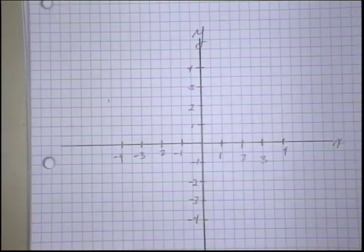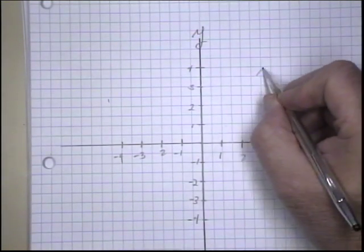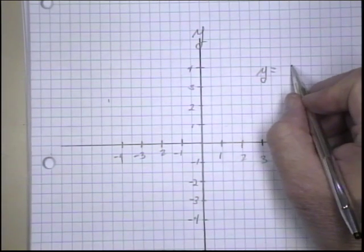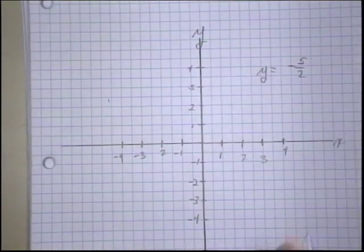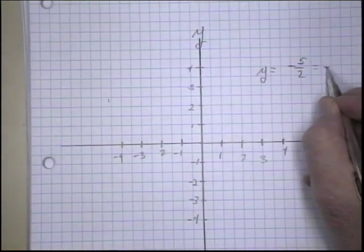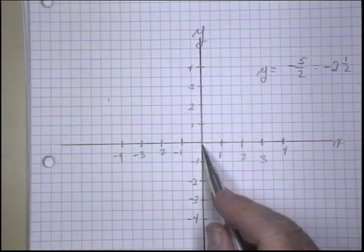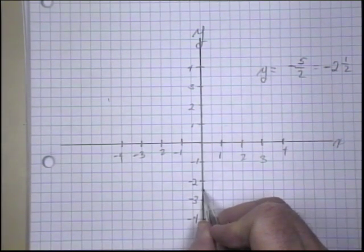So our Y-intercept, we said, was the B term in our equation, which was a minus 5 halves. Well, a minus 5 halves is a minus 2 and 1 half. So if I mark on my y-axis, a minus 2 and 1 half, that will bring me to this point here.